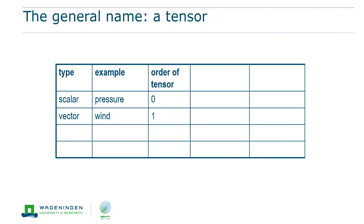And so we want to give all of these variable types a common name. We're going to call them tensors. The thing that distinguishes the different types then is the order of the tensor. That is given in the third column. The scalar has order 0 and a vector has order 1.